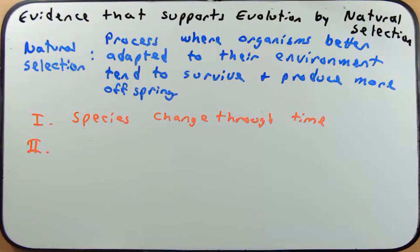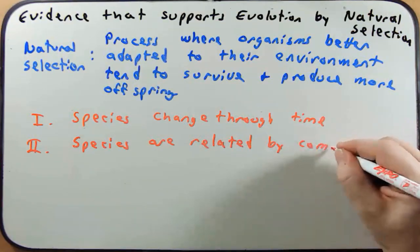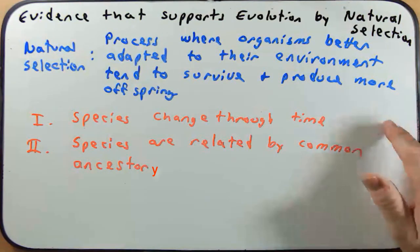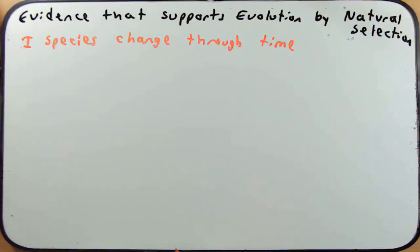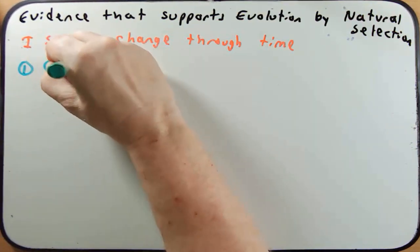The second prediction is that species are related by a common ancestor. If one species replaces another because it's better adapted but they came from the same population, then they should be related. I'm going to go over eight pieces of evidence to support these two predictions. The first five relate to the prediction that species change through time, and the first piece of evidence relates to geologic time.